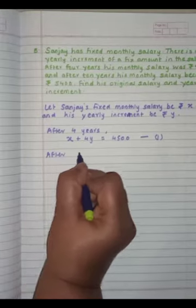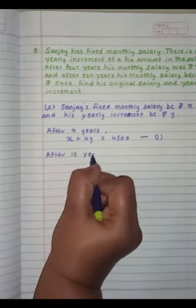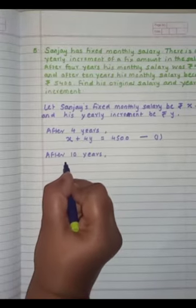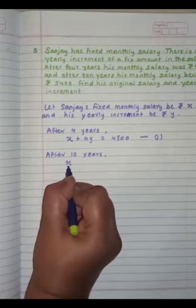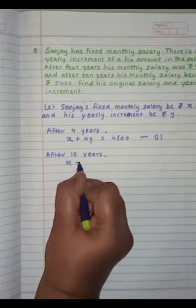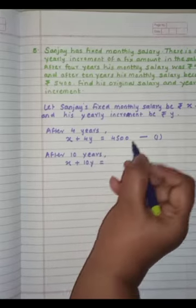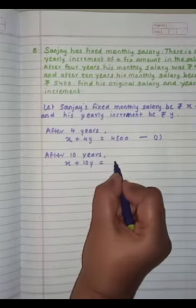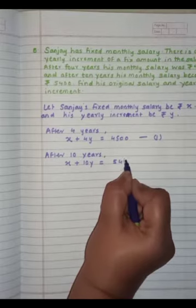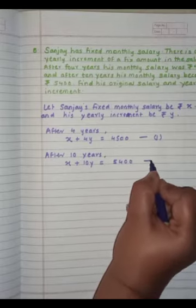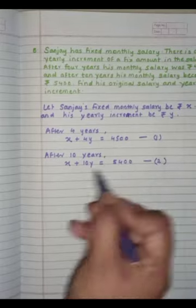Same way, after 10 years, his again fixed salary remains same, that is X plus increment, he will get 10Y. And together, he got salary 5,400. So this is our equation number 2.